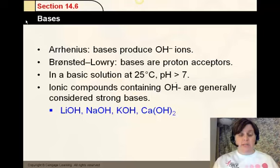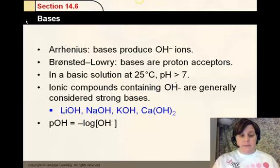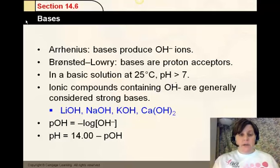So you can add that to your list of strong bases. We had a list of strong acids. This is a list of strong bases. And remember, the pOH is the negative log of the OH ion concentration. Earlier, we talked about how pH, pOH, hydrogen ion, and hydroxide ion are related. And of course, pH would be 14 minus the pOH.